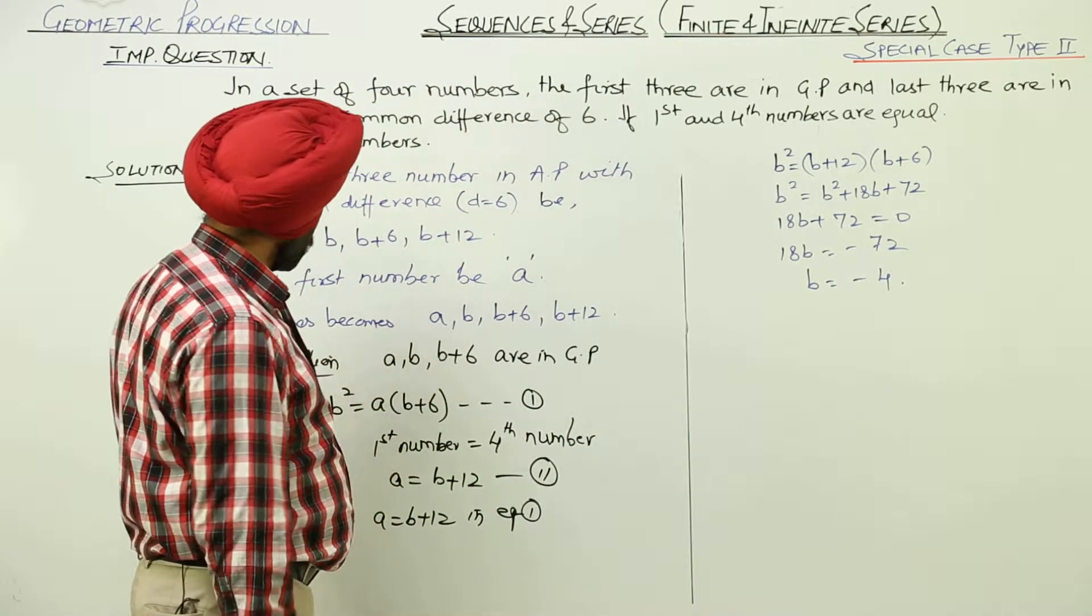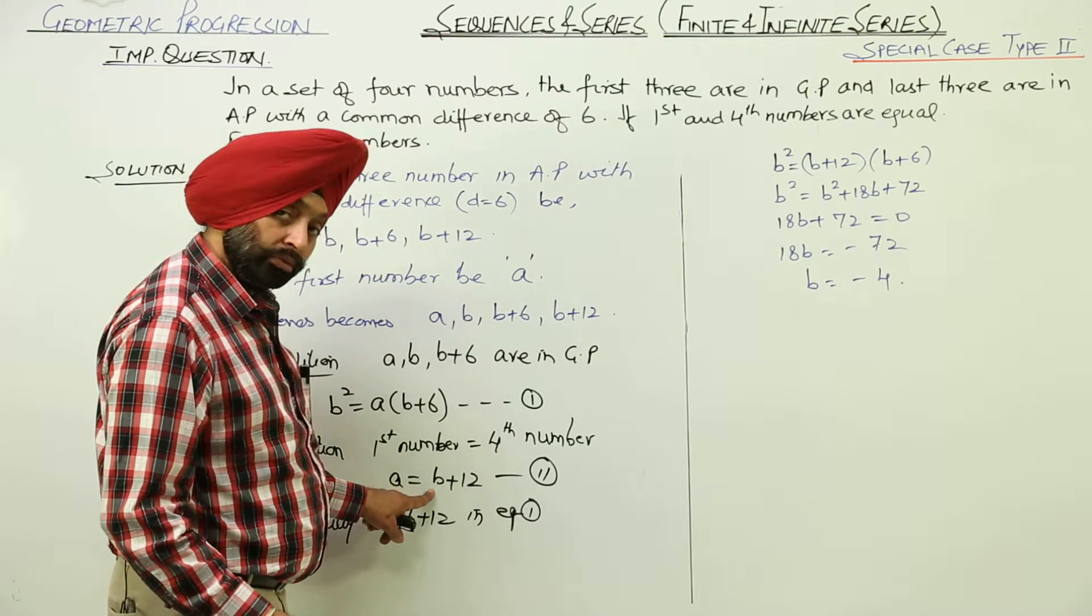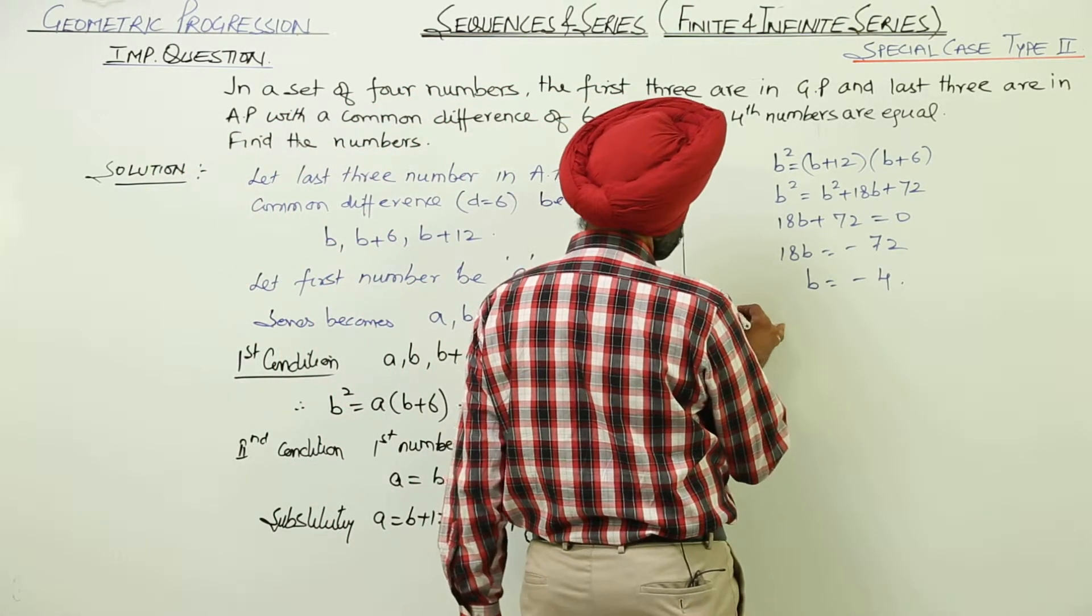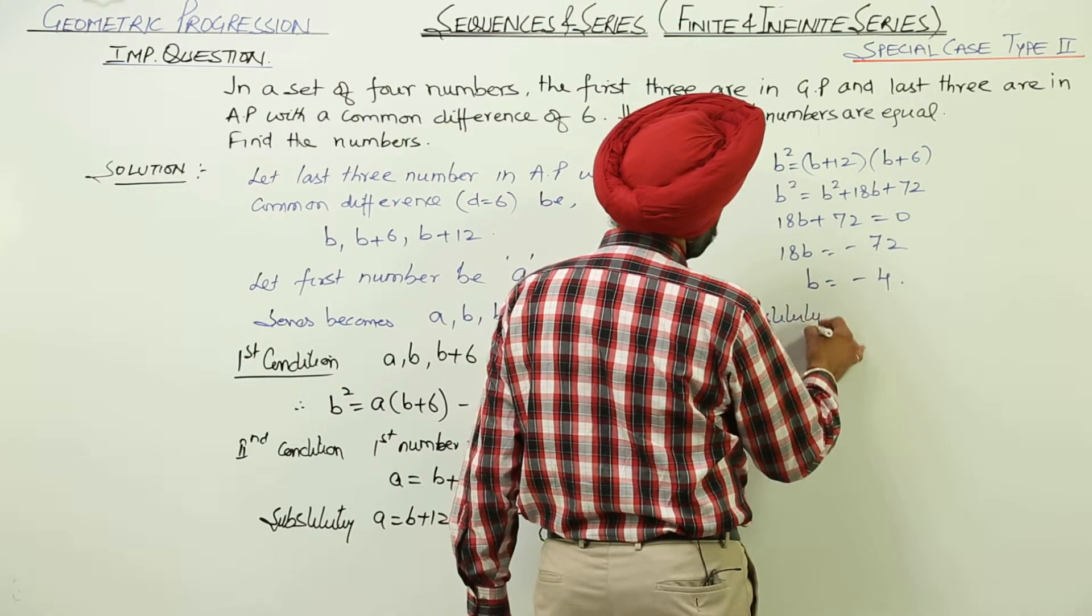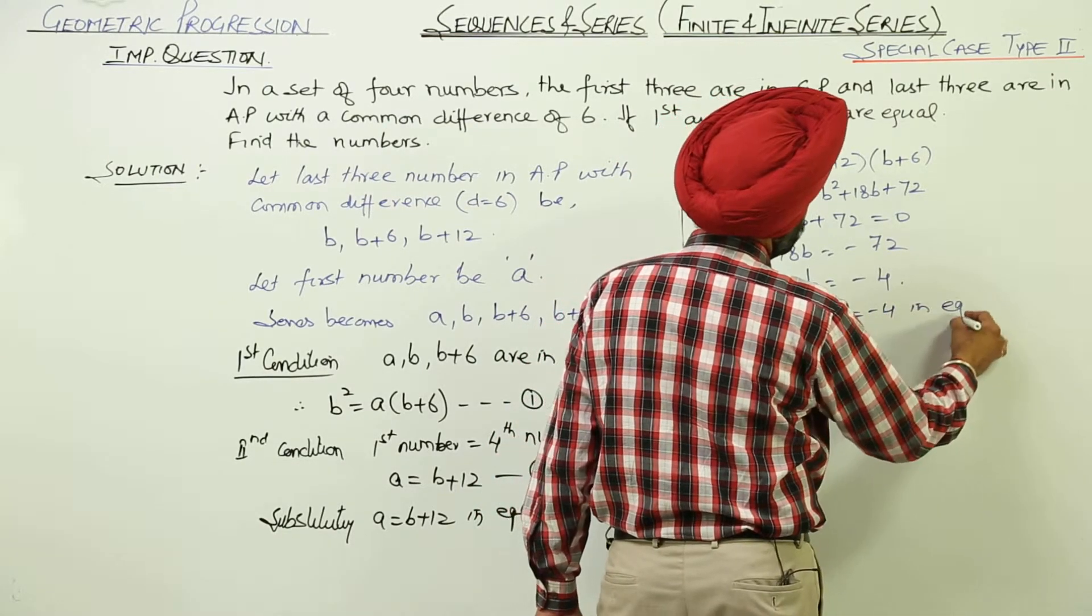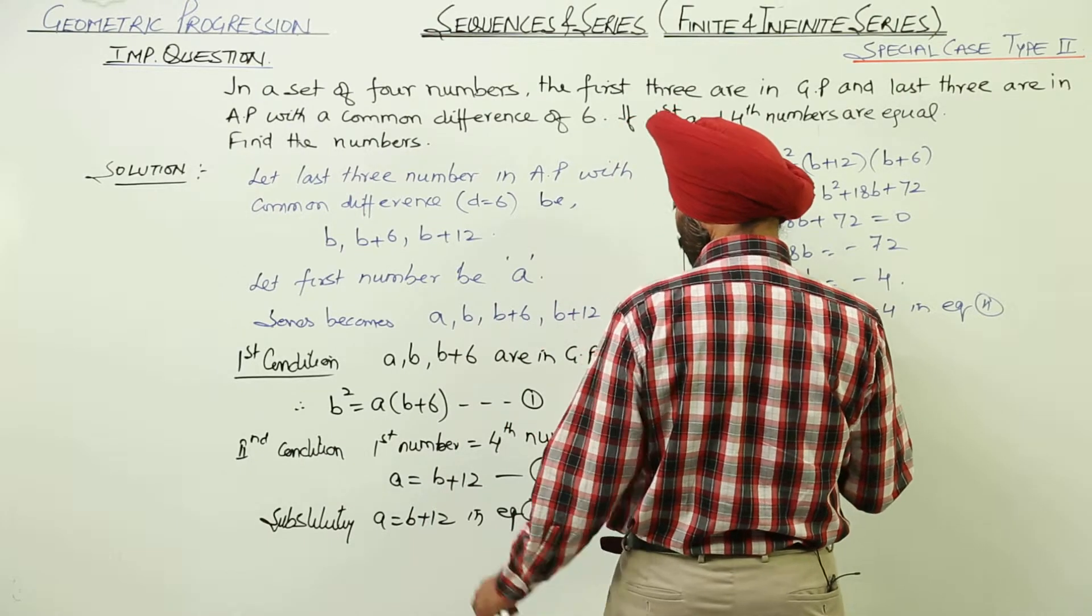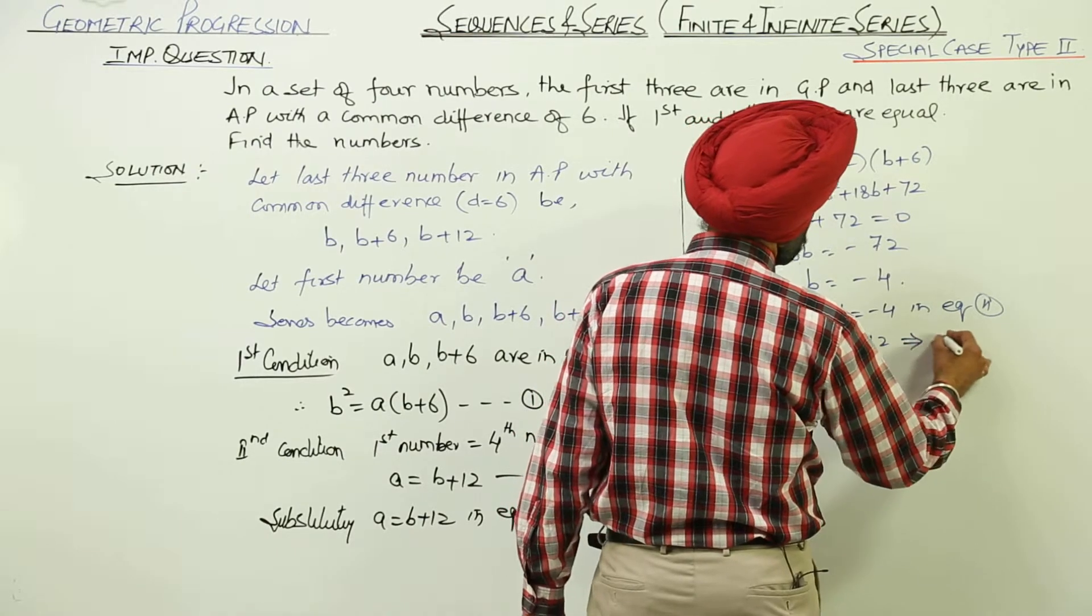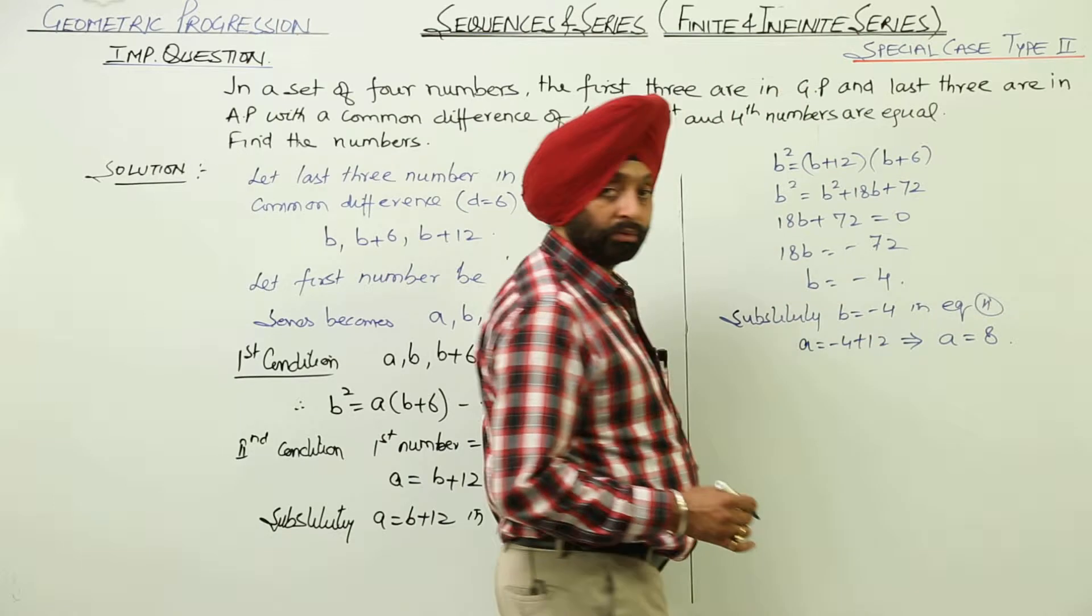Now, first thing what we want? That is A and from equation 2, A is equal to B plus 12. Now, substituting B is equal to minus 4 in equation 2. So, A is equal to minus 4 plus 12. So, A is equal to here we are getting 8.